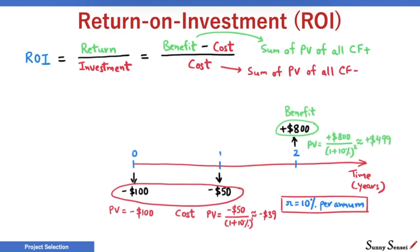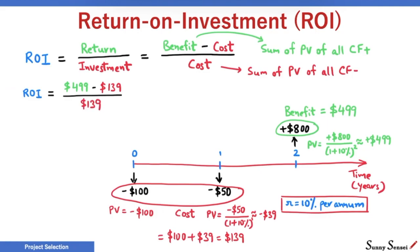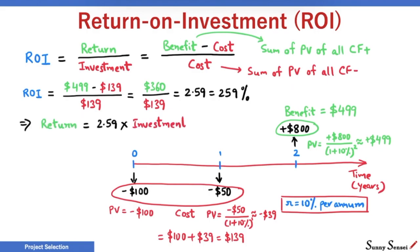Let us go back to the example we used for the benefit-cost ratio. We already have the present values of all cash flows. Cost is $100 plus $39, that is $139 — the negative sign is ignored. Benefit is $499. ROI is benefit minus cost divided by cost, or $360 divided by $139. We get 2.59, or 259%. It is common to represent ROI as a percent. Return is 2.59 times the investment — if we invest $1, we get a return of $2.59. Definitely a great project to invest in.